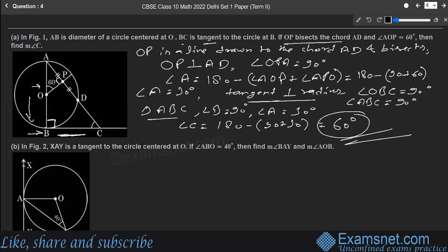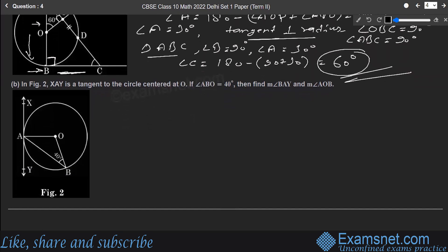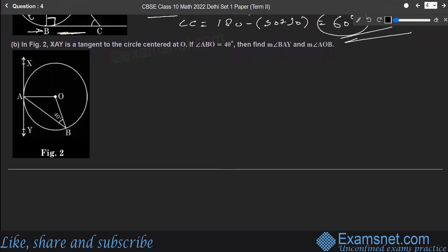Question 4, Figure 2: XAY is a tangent to the circle centered at O at point A, and angle ABO = 40°. We need to find angle BAY and angle AOB.